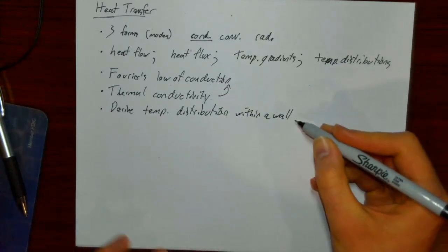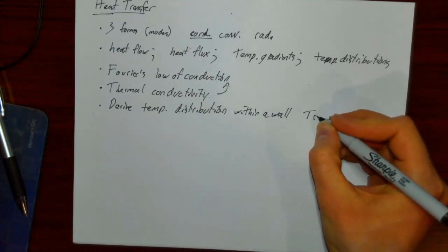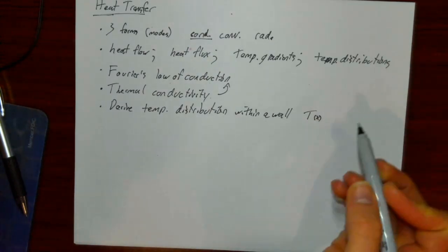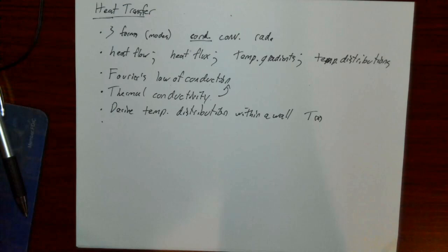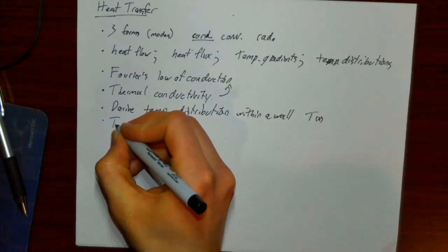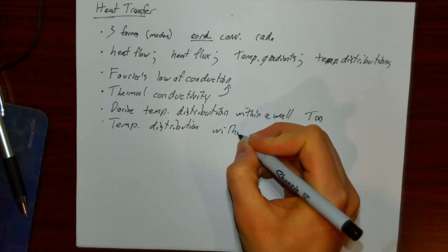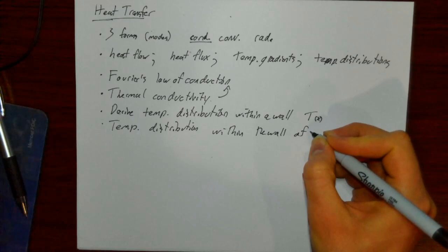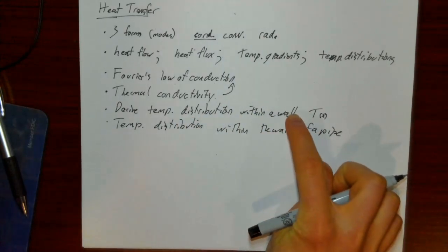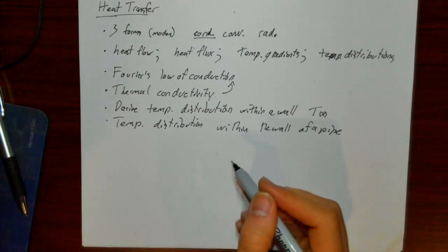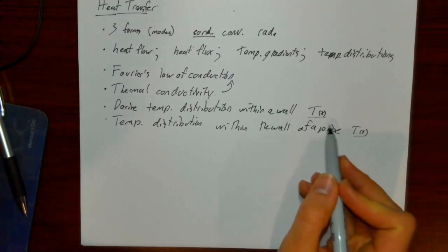We'll have a hot side of the wall and a cold side, and we'll see how temperature varies within the wall — temperature as a function of x, where x is our position within the thickness of the wall. Then we'll do a similar derivation for the temperature distribution within the wall of a pipe. If the pipe has thin walls it's not too different, but with thick walls we get a different result — temperature as a function of r in cylindrical coordinates.